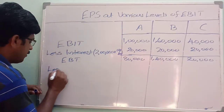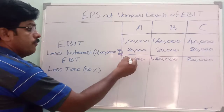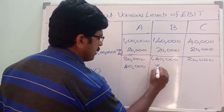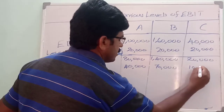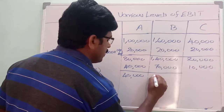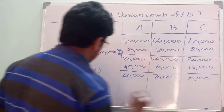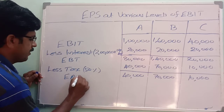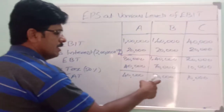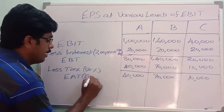Next we deduct tax from EBT. Tax is 50 percent of EBT. So 50 percent of 80,000 is 40,000; 50 percent of 1 lakh 40,000 is 70,000; and 50 percent of 20,000 is 10,000. The balance amounts — earnings after tax (EAT) — are 40,000; 70,000; and 10,000. This earnings after tax is otherwise known as earnings available to equity shareholders, as preference shareholder details are not given in the question.